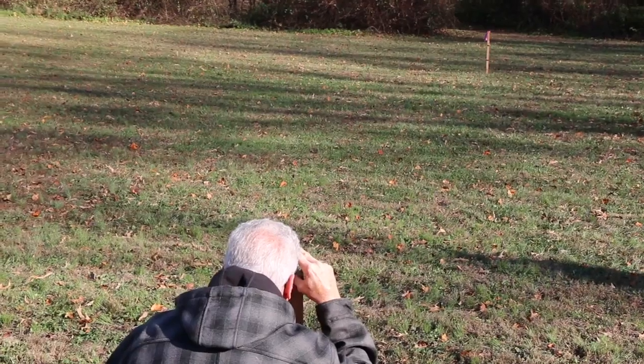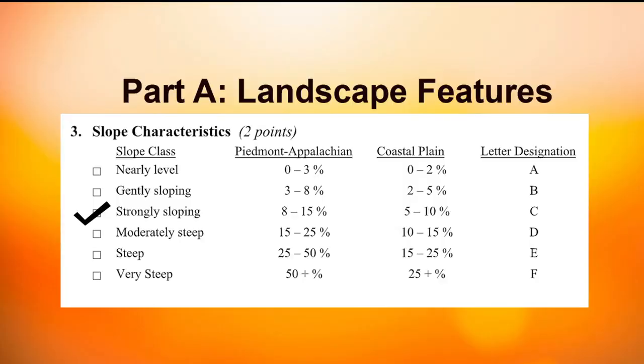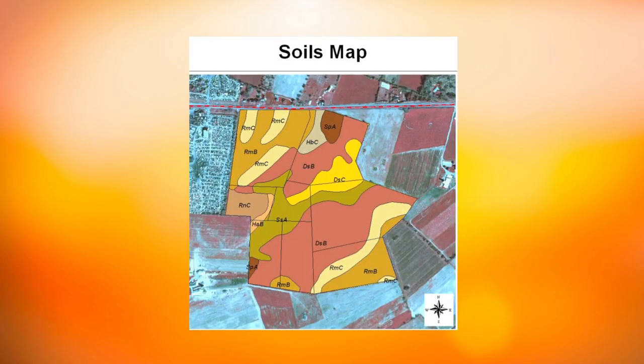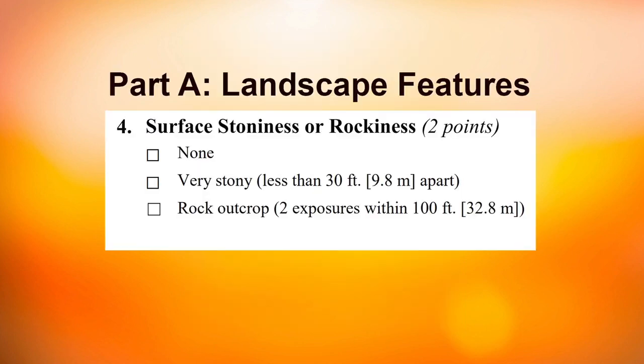The key to remember is that if you're in the coastal plain region, the slope breaks are slightly different than they are in the Appalachian and Piedmont region. At this particular site, we measured the slope and you would want to check strongly sloping because it falls in the 5 to 10 percent category. The other element that influences the kind of map unit published on the soil survey report is surface stoniness or rockiness — whether the surface is very stony, referring to rock fragments that exceed 10 inches in diameter.